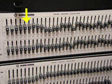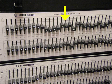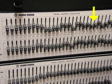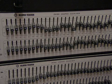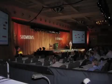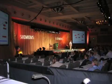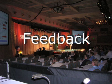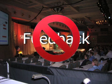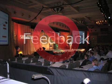The EQ pattern that results from feedback tuning is usually the inverse of the sum of the natural resonances of the room and the non-linearity of the sound system. In any case, once the room has been tuned this way, the chances of feedback are greatly reduced.